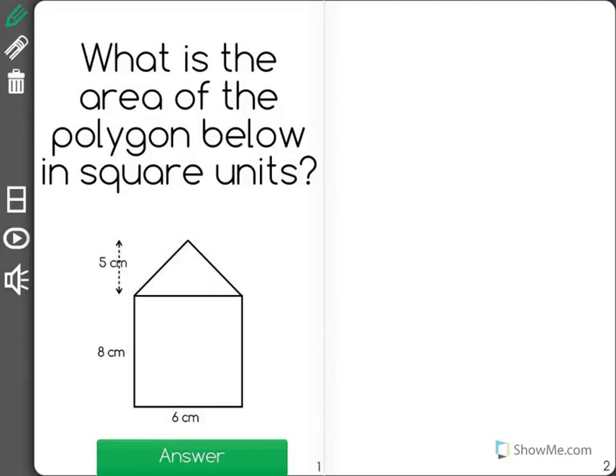What is the area of the polygon below in square units? We can see that the polygon is made up of a rectangle as well as a triangle.